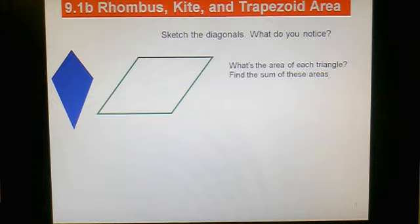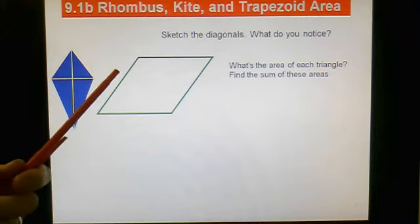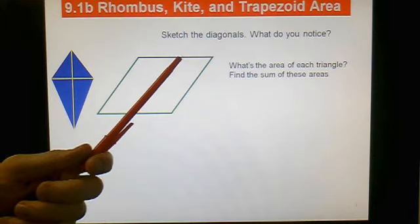So what I want you to do, start off on your paper sketching the diagonals for these two shapes. Of course you can tell that's a kite, if you remember your definition for a kite, this is a kite. And this one is actually a parallelogram, but it's actually a rhombus, which means all these sides are equal.